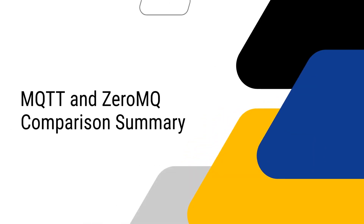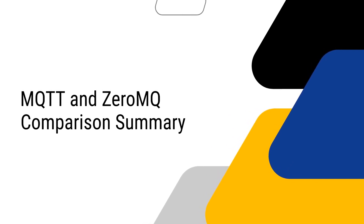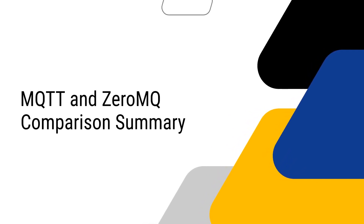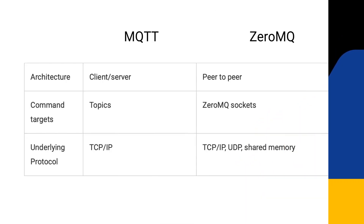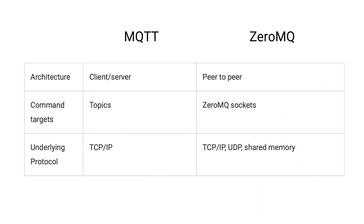Now that you understand the basics of MQTT and ZeroMQ, let's do a quick comparison of them. MQTT uses a client-server based pubsub architectural pattern while ZeroMQ uses a peer-to-peer model. ZeroMQ can also employ broker-based pubsub communication. The major difference, however, is the heavy lifting that you have to perform with ZeroMQ in order to achieve the broker-based pubsub communication pattern that is inherent in MQTT.